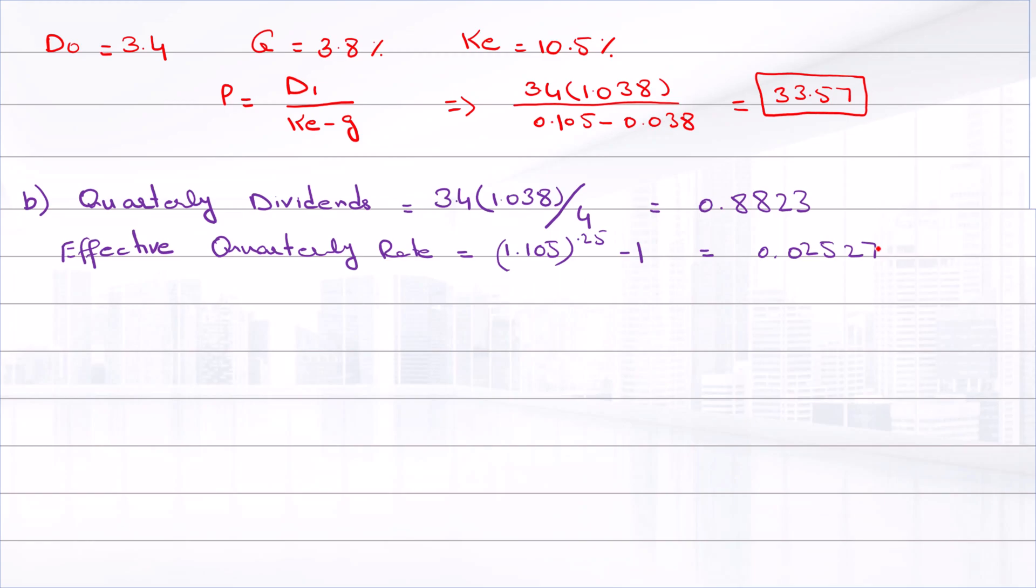The effective annual dividend = 0.8823 × FVIFA(0.02527, 4) = $1.79. Now we can use the constant growth model to find the current stock price: P = 1.79/(0.105 - 0.038) = $26.67.